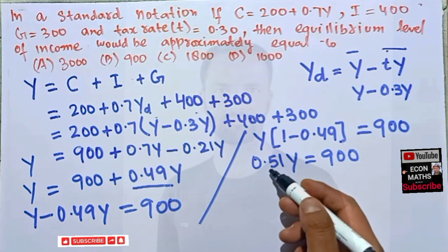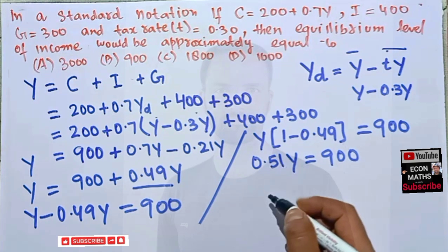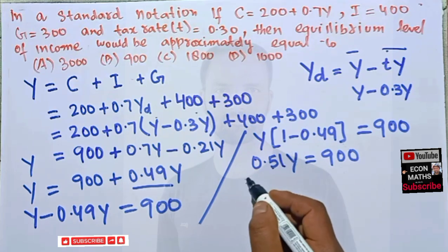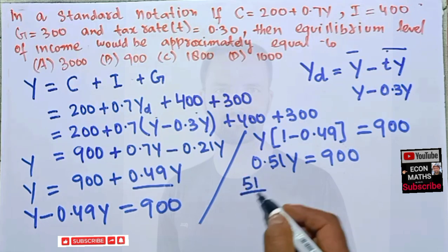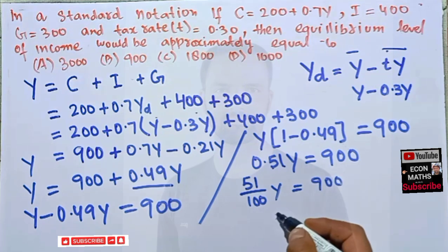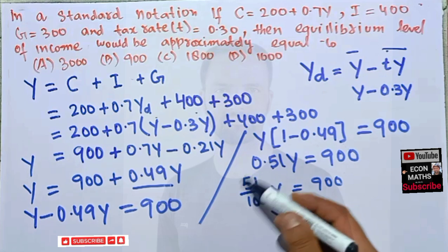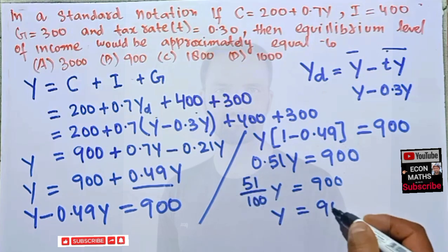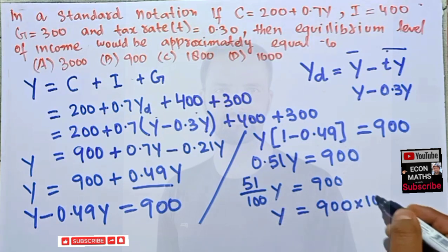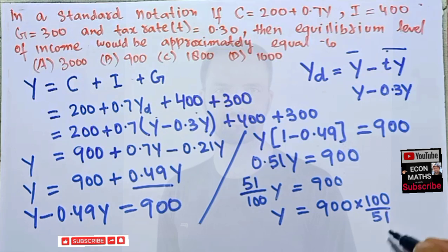This 0.51 can be written as 51 divided by 100, so we have 51 divided by 100 Y is equal to 900. Or our Y is equal to now if we transpose this term on RHS it will get reciprocated also, this is 100 divided by 51. So this comes out to be 900 into 100 is equal to 90000 divided by 51.